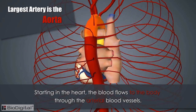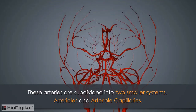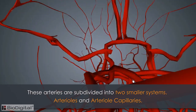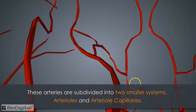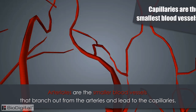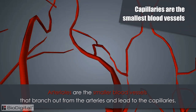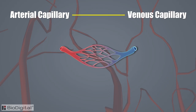The largest of these arteries is known as the aorta. These arteries provide the pathway for blood to travel to the body from the heart. Arteries are then further divided into arterioles and arterial capillaries. Arterioles are smaller blood vessels that branch out from larger arteries and lead to the arterial capillaries, which are the smallest blood vessels in the body. The arterial capillaries are connected to the venous capillaries.